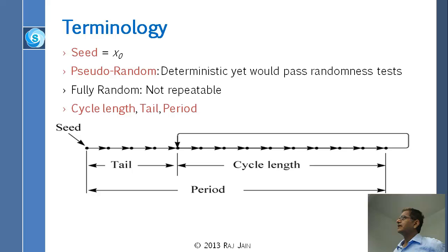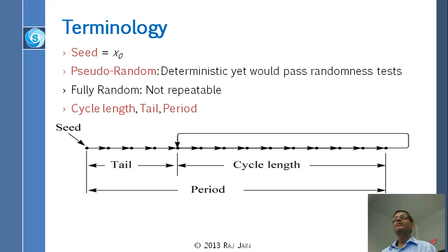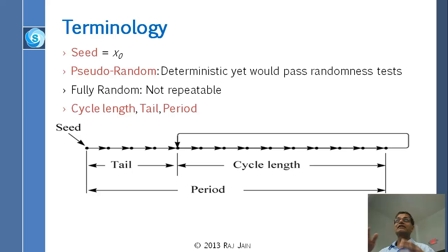Fully random would not be repeatable. The problem with using fully random number generators is that every time you ran the simulation a different number comes out, so you cannot show that simulation to anybody — a whole different result comes out each time. You want them to have the same result unless you want to change it. Given the same seed, you should get the same result. You can change the seed to get a different result. So we don't use fully random generators.